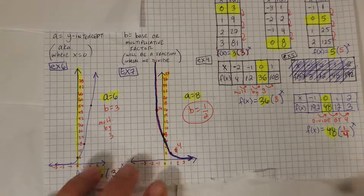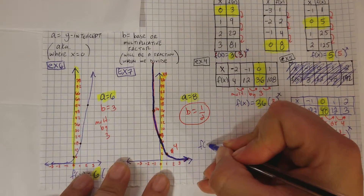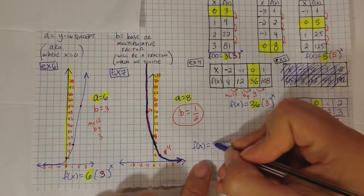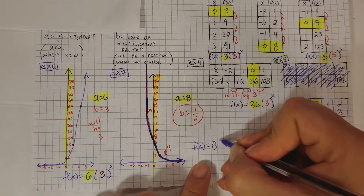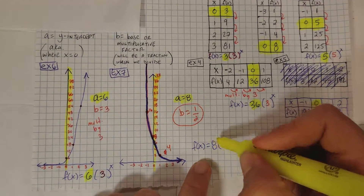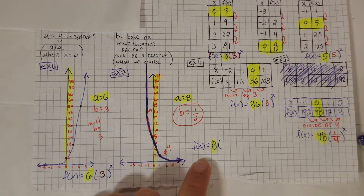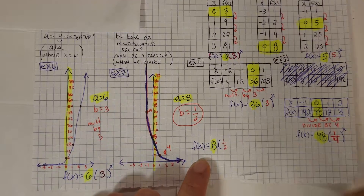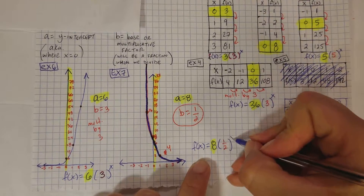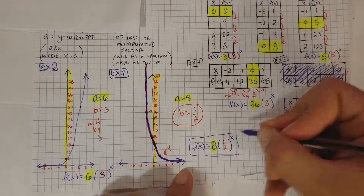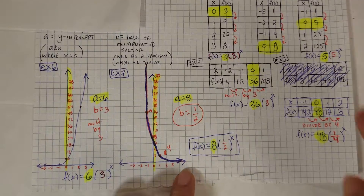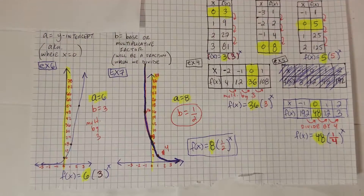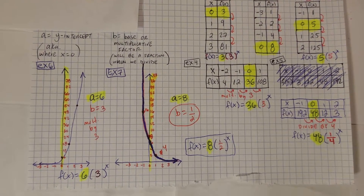If you ignore the terribleness of this graph and just look past that, you'll notice that the value of the function is the same. So a goes on the outside, b goes on the inside — 1 over 2 — and then that will be to the power of x. That is how you convert from a table or a graph to an exponential function. I hope this was helpful — you guys have a good one, see you in class.